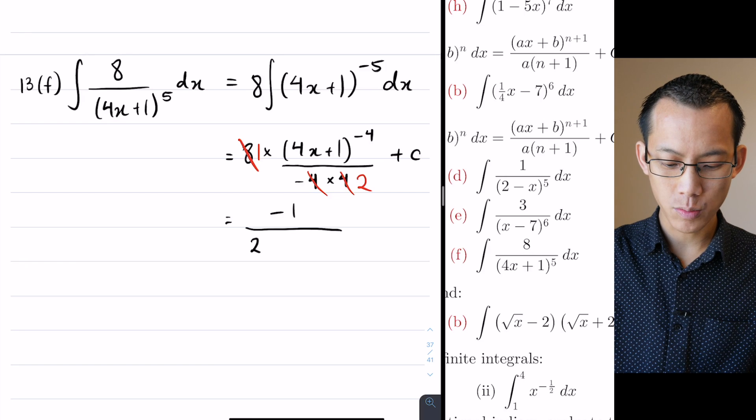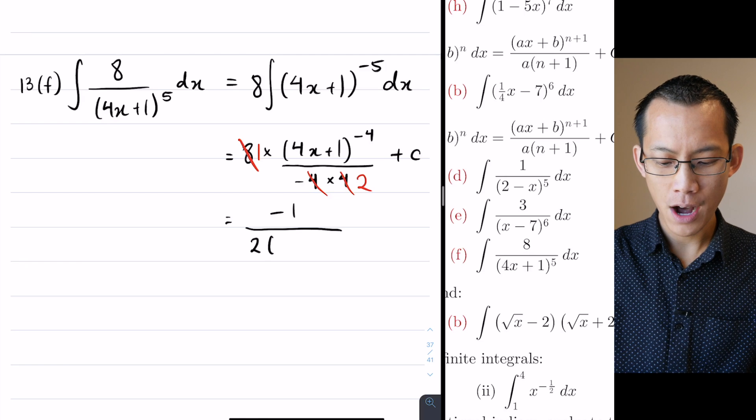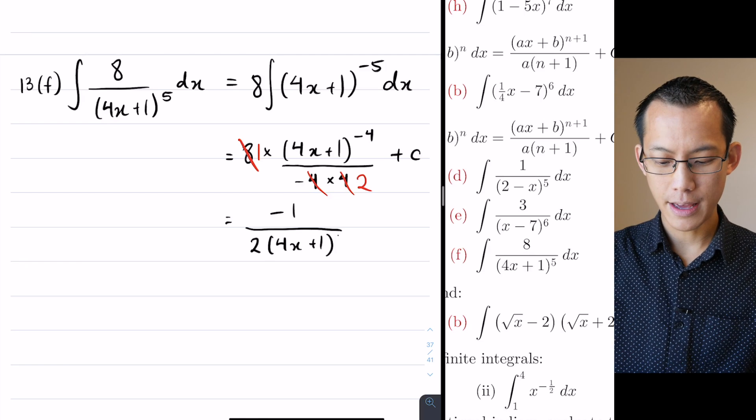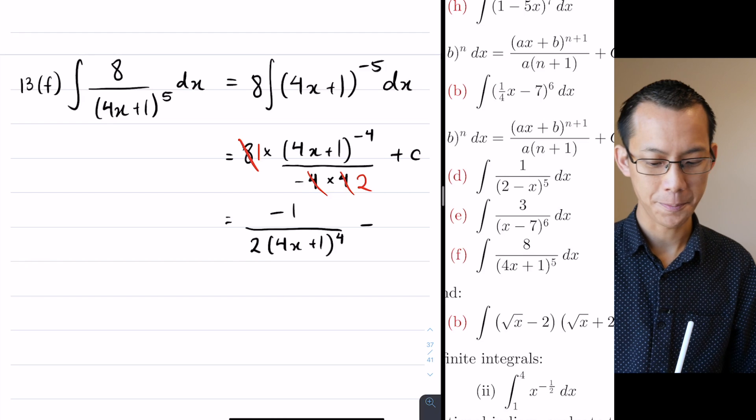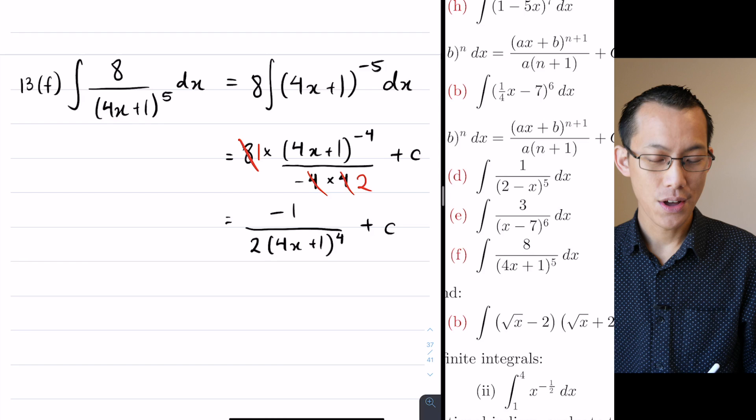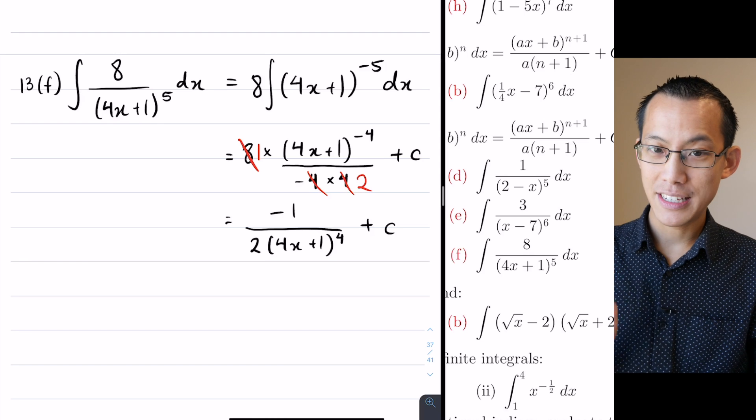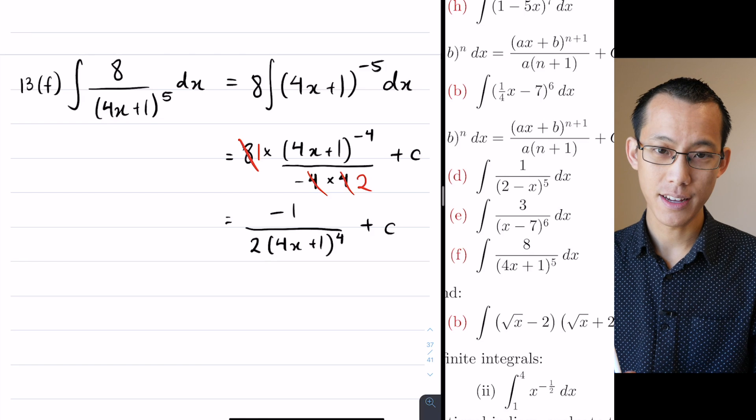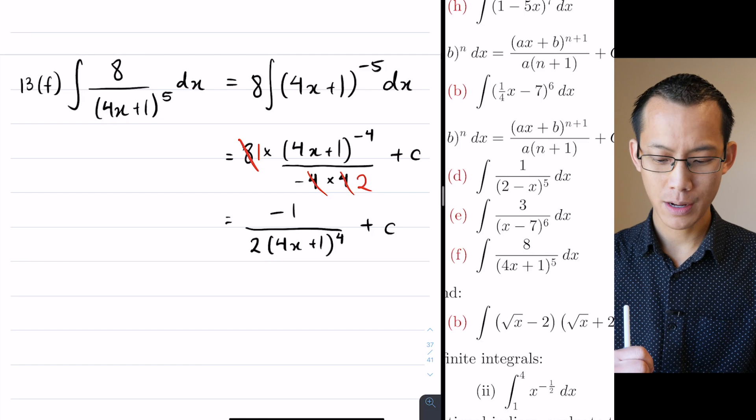The question didn't have any negative indices – I put the negative indices in there to make it easier to deal with – so I'm going to return it to positive indices, which means this (4x + 1) raised to a power goes on to the denominator. It's a 4, and then I say plus c. And now I'm finished.